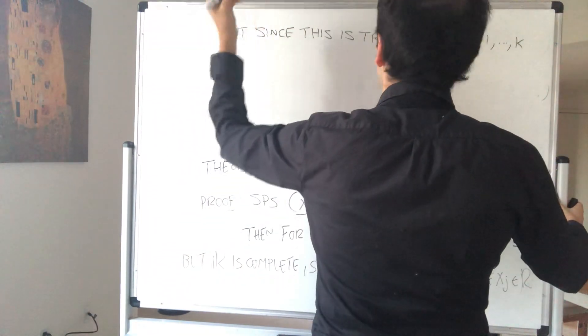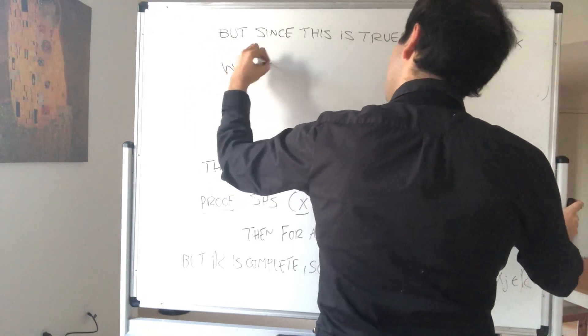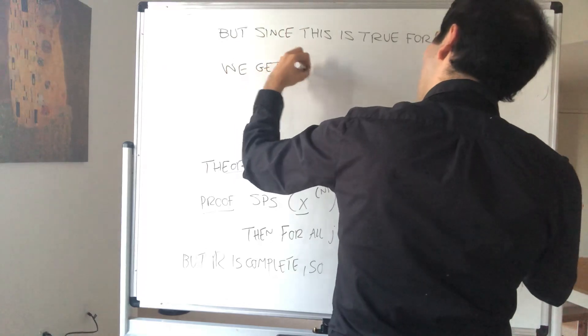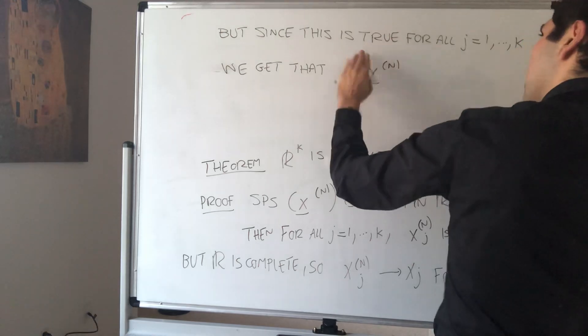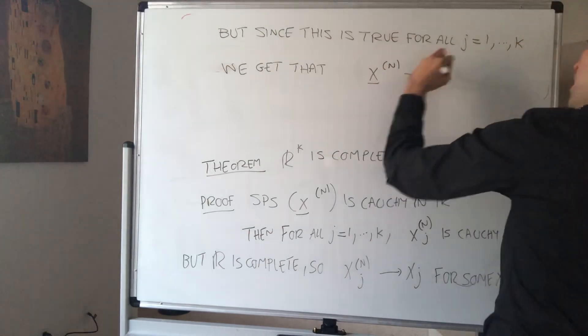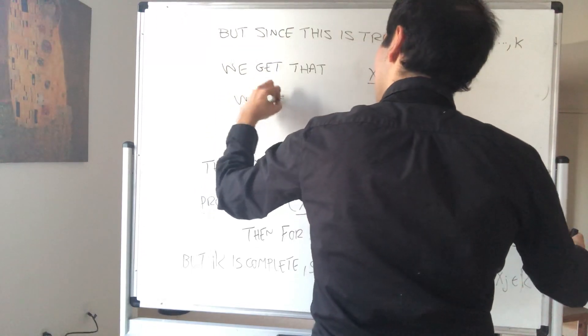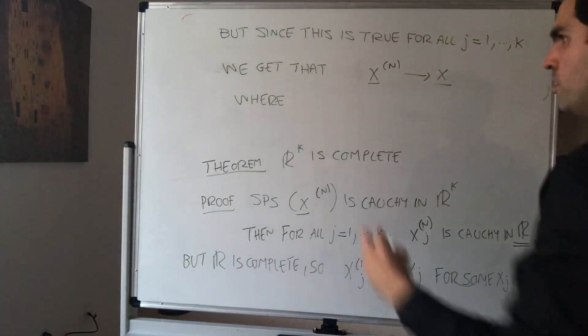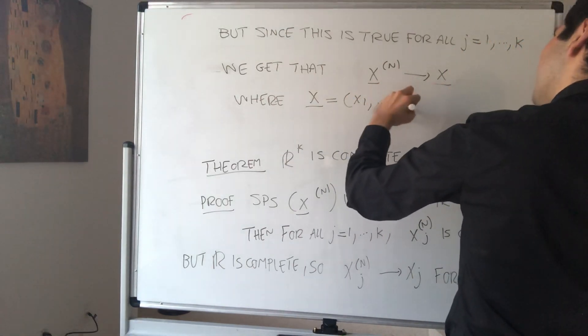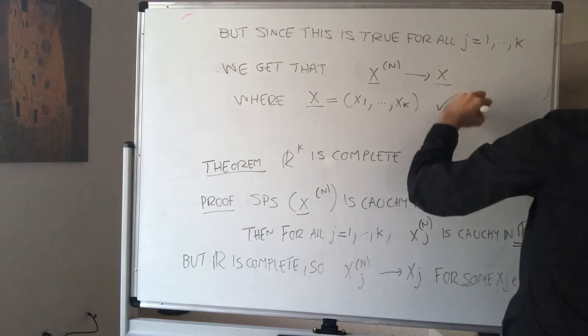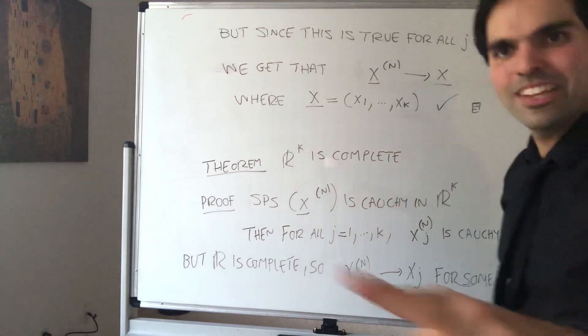Therefore, since this is true for all j, we get that the whole sequence converges. So X_n converges to X, where what is X? X is just all the limits put together. So X is X_1 up to X_k. Again, a really nice proof that just flows like water. Alright, thank you.